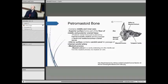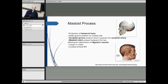The inferior surface contains the carotid canal for the internal carotid artery, and the mastoid process is the location of your mastoid air cells. The mastoid process itself is a projection of the temporal bone, and there's a deep groove present on its medial side.